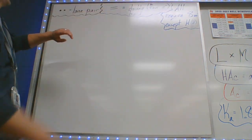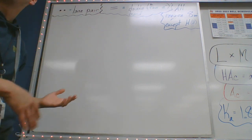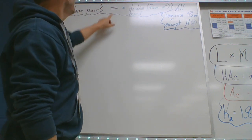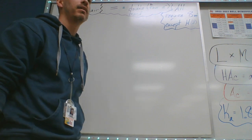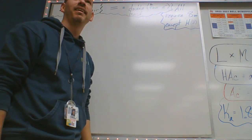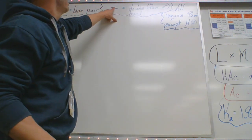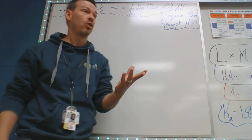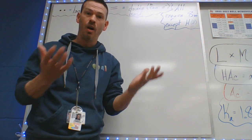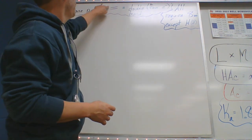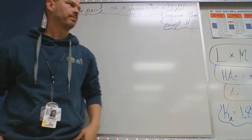Anytime we have two dots that are free-floating, that'll be a lone pair. Anytime you have a line, it represents a bond — so two lines would be a double bond, and three lines would represent a triple bond. Every single line represents two shared electrons, which is why a double bond has four shared electrons. Three lines — a triple bond — would be six shared electrons.